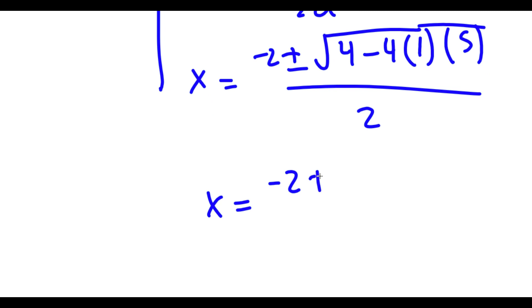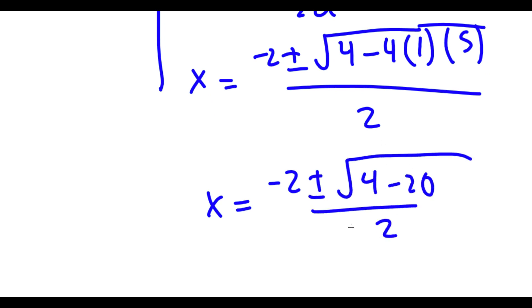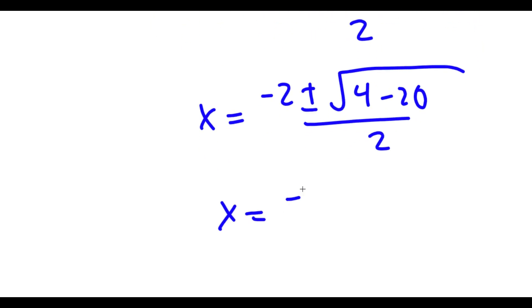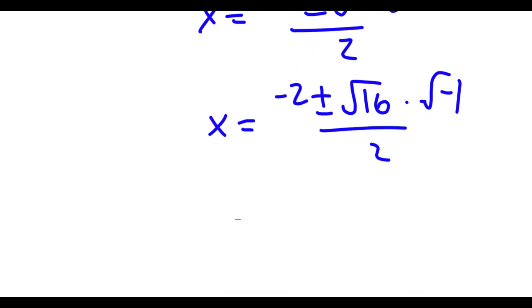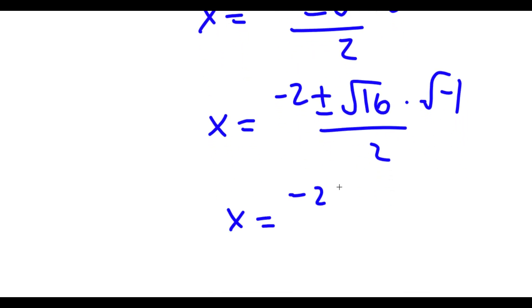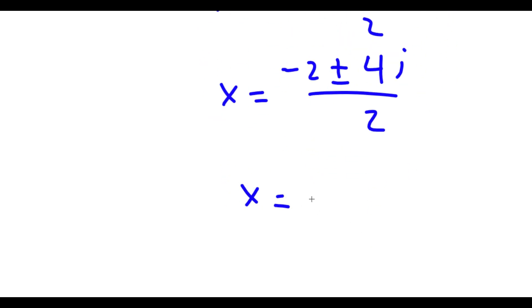Now this is the same thing as negative 2 plus or minus the square root of 4 minus 20 over 2, which is equal to negative 2 plus or minus the square root of negative 16 over 2. Now the square root of negative 16 is the same thing as the square root of 16 times the square root of negative 1, and the square root of negative 1 is equal to the magic number i. So negative 2 plus or minus 4i over 2, which is equal to negative 1 plus or minus 2i — so two more solutions.